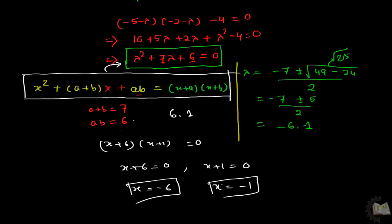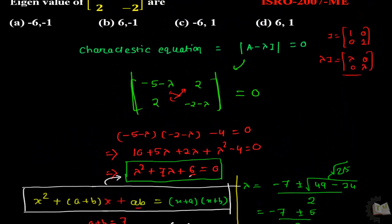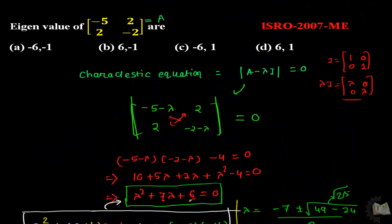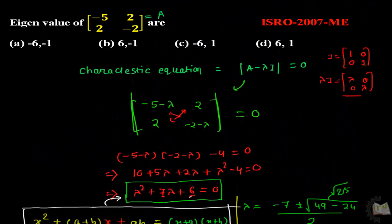You get the same two answers using the quadratic formula. This shortcut method is very simple — no need to use the quadratic formula. Just observe the equation and the answer is minus 6 and minus 1.